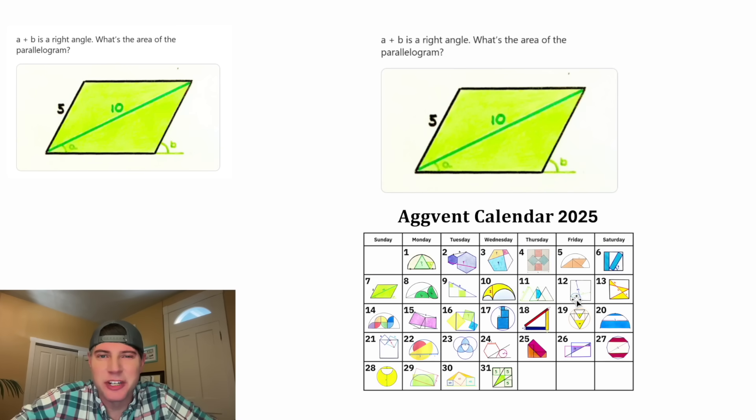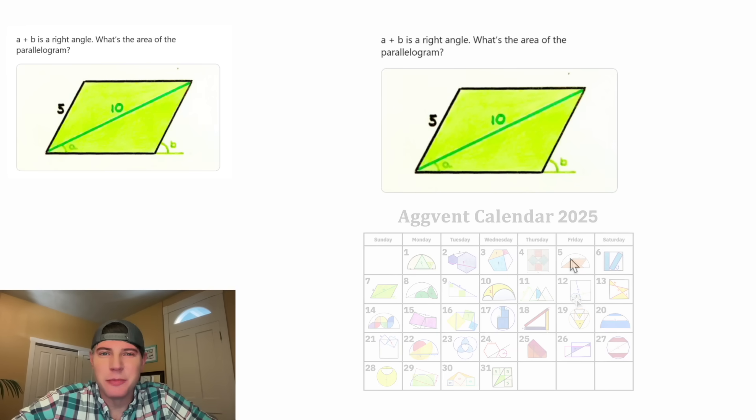This is day 7 of the 2025 AgVent calendar. For the month of December, we're going to try to solve 31 Katrina Ag puzzles in 31 days. As of right now, I'm two weeks behind schedule.